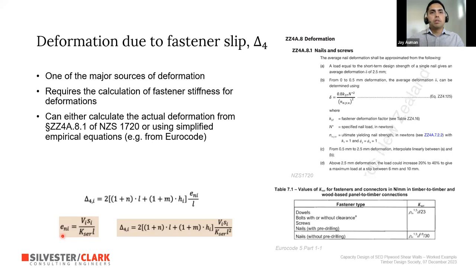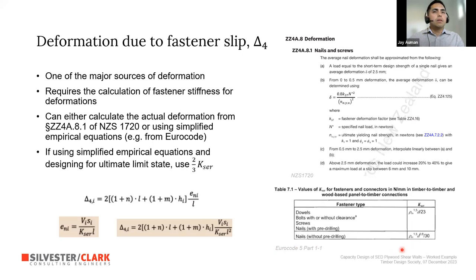The Eurocode 5 table provides K-ser for nails without pre-drilling, dependent only on the mean density of the embedding material and nail diameter. Because these stiffnesses are at serviceability limit state, a reduction factor of two-thirds must be applied to convert to ULS stiffness accounting for the post-yield state. If stiffness is calculated directly from the NZS 1720 curve at the actual load level, no reduction factor is needed since you are already on that curve.